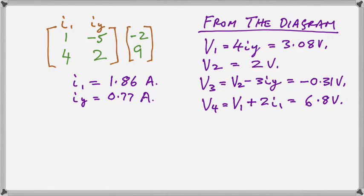Now, we have solved it here on the page, and notice that from the diagram, we are able now to immediately establish our voltages V1 to V4. Because of the resistors that are coming up from ground, V2 is obviously just the 2-volt source. V1 is 4 times IY, and V3 would be V2 minus 3IY, and V4 would be V1 plus 2I1.